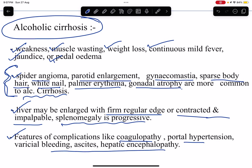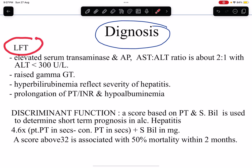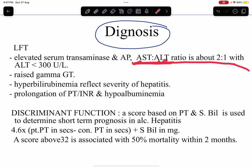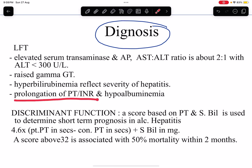For diagnosis, liver function tests show elevation of transaminases and alkaline phosphatase. The ratio of AST to ALT is about 2:1, with ALT being less than 300 units per liter — this ratio is important. There will be raised GGT. Hyperbilirubinemia reflects severity of hepatitis — the more severe the hepatitis, the more severe the hyperbilirubinemia. If coagulopathy is present, there will be prolongation of PT and INR, and hypoalbuminemia.